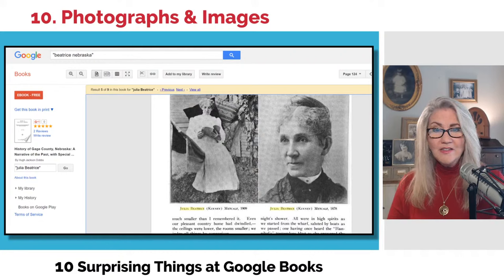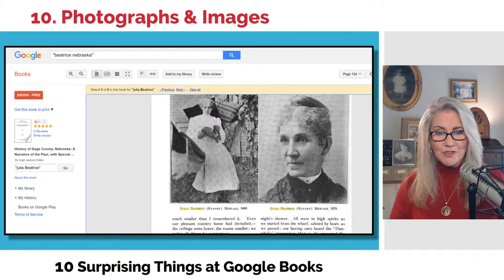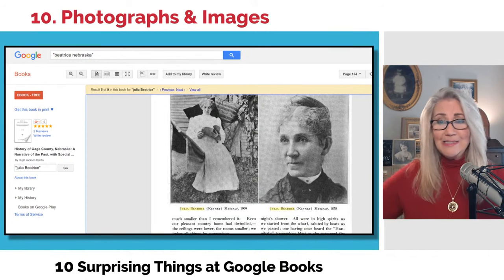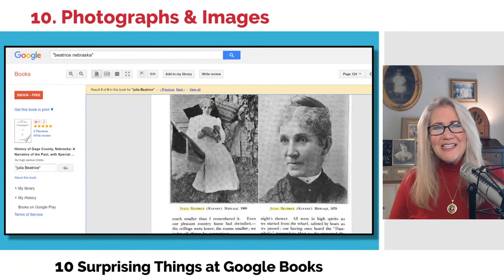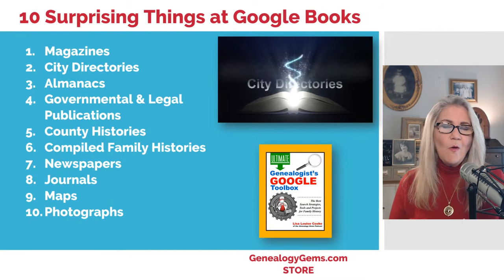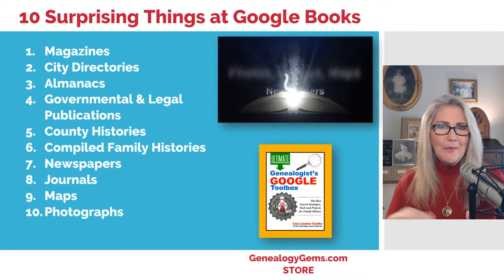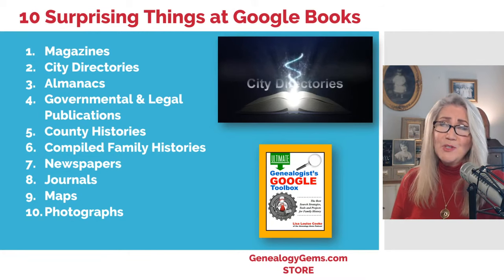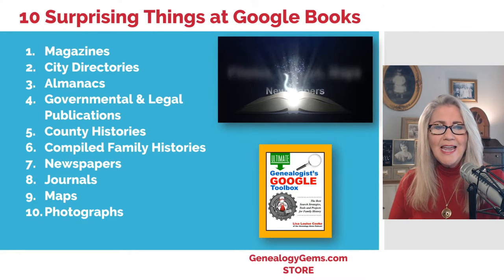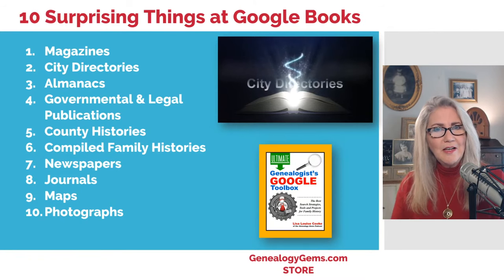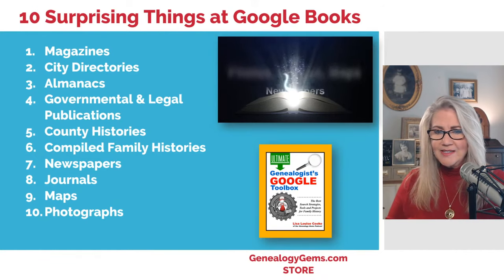There you have it — ten kind of surprising things at Google Books. Maybe things you didn't know were there, or you've looked before but need to get back and check out. It's particularly surprising now that the newspaper archive is so much more searchable over at Google Books. Using terms we don't always think about, like "almanac," could bring up something new that would be a wonderful surprise for us.